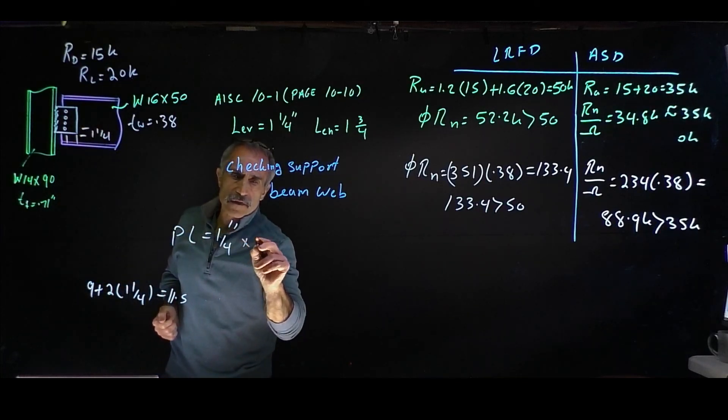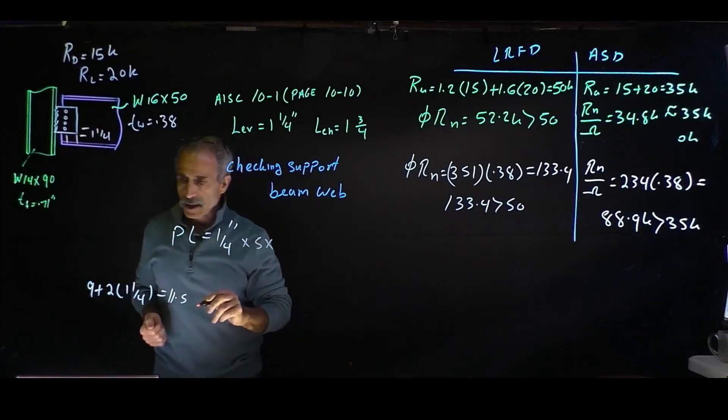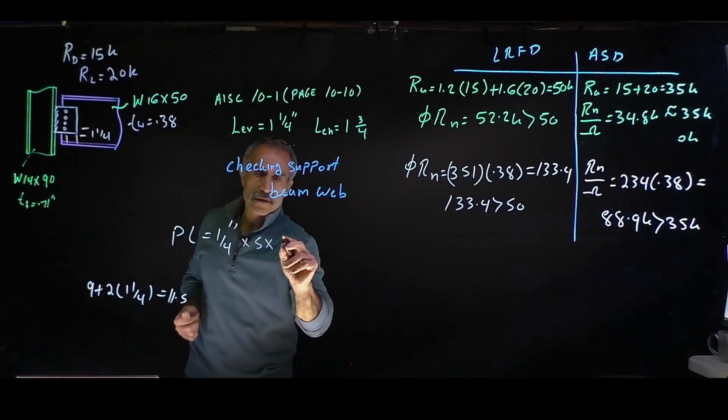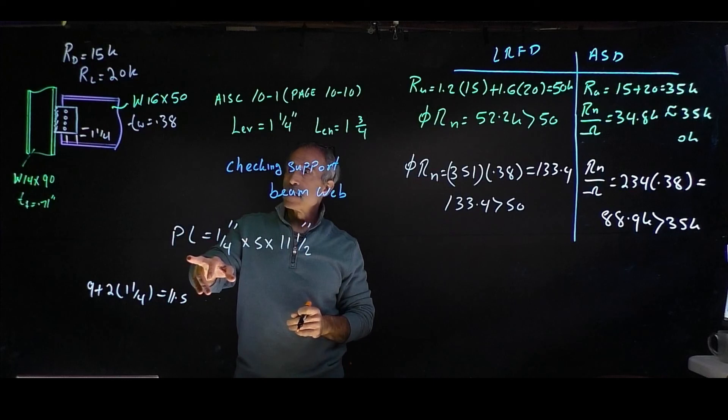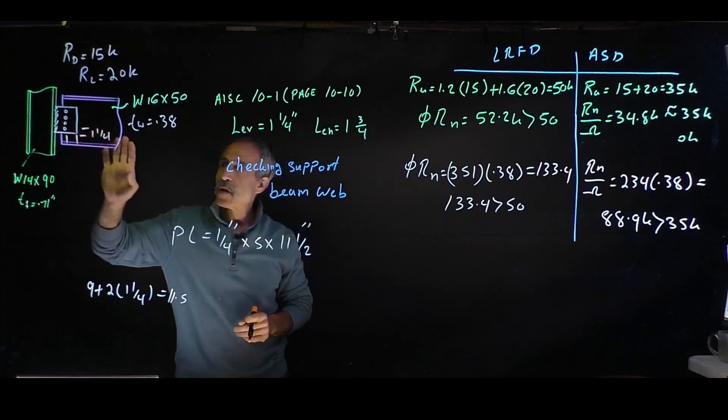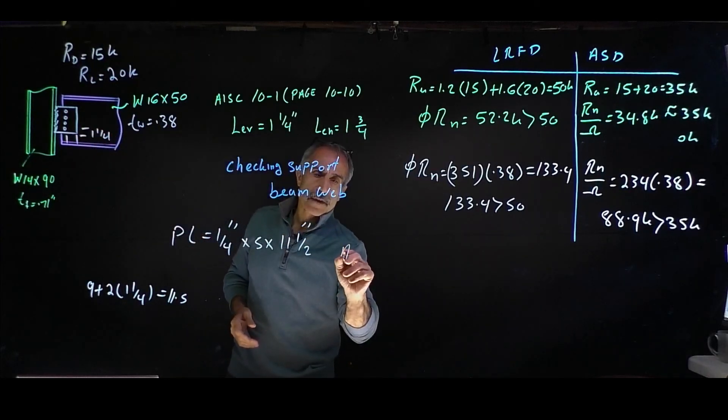So we're going to have a plate 1/4 by 5 inch by 11-1/2. So this is our plate size with four holes and A36 steel.